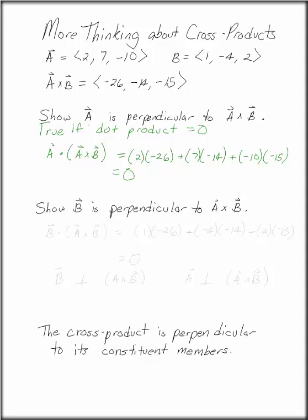To show that B is perpendicular to A cross B, we're going to do the same thing. The dot product of B and A cross B is 1 times negative 26 plus negative 4 times negative 14 plus 2 times negative 15. When you multiply on a calculator, you will find that this is, in fact, equal to zero.